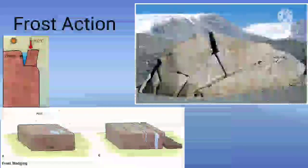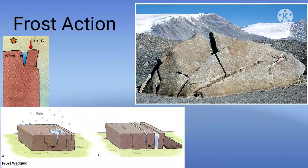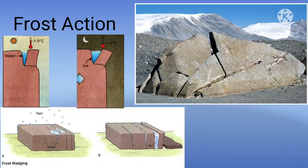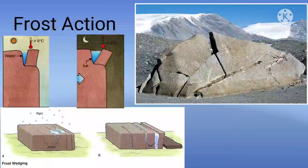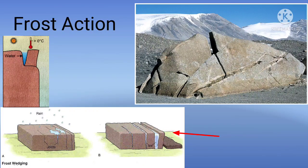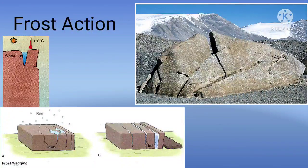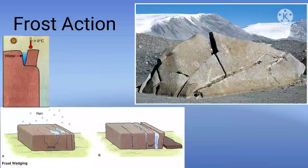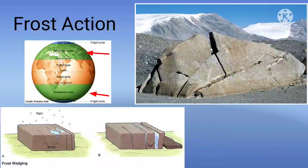Frost action occurs in cold regions where temperature during the daytime is above freezing point (more than 0°C) and during the night is below freezing point (less than 0°C). Water enters the cracks and joints of rocks during the day, then freezes at night. Frozen water (ice) requires more space than water, so the joints are pushed apart. More water collects in the widened joints the next day, the process repeats, and ultimately a piece of rock is separated from the parent rock. This is termed frost shattering or frost action, best seen in temperate and mountainous regions.